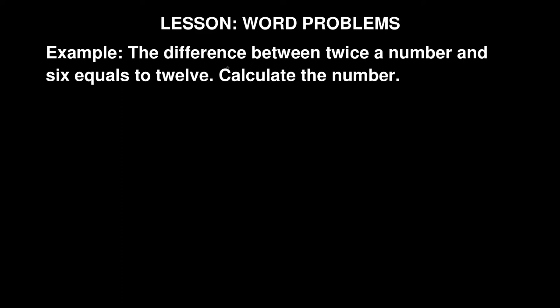So it's kind of a confusing statement, but you need to analyze it part by part. The first part says 'the difference'—the word difference means a minus. Then 'twice' means you multiply by two. Twice a number—we don't know that number, so we're going to make that number equal to x. So already you can see 2x is coming, and six equals to 12, so you can see the equal sign there.